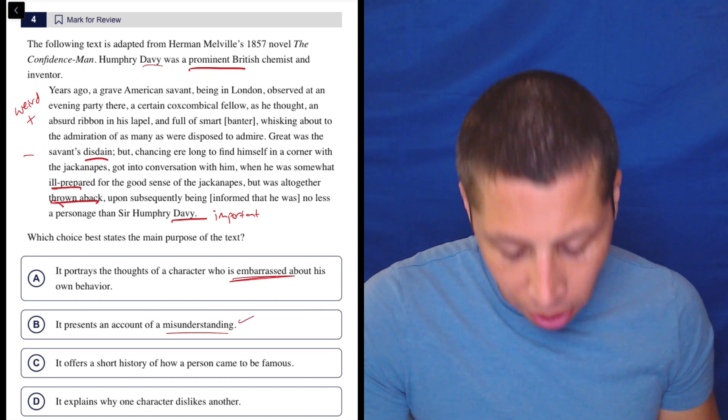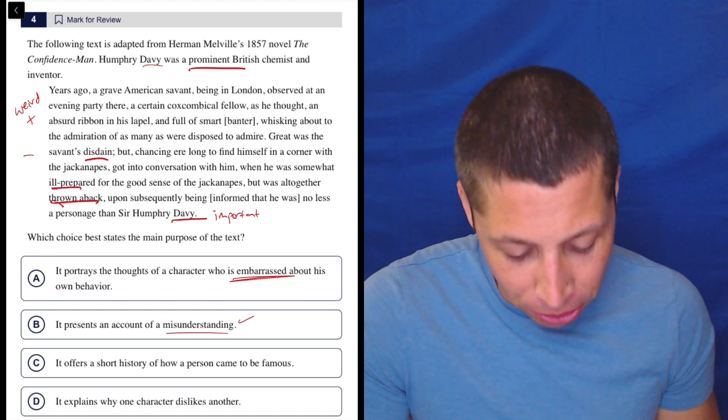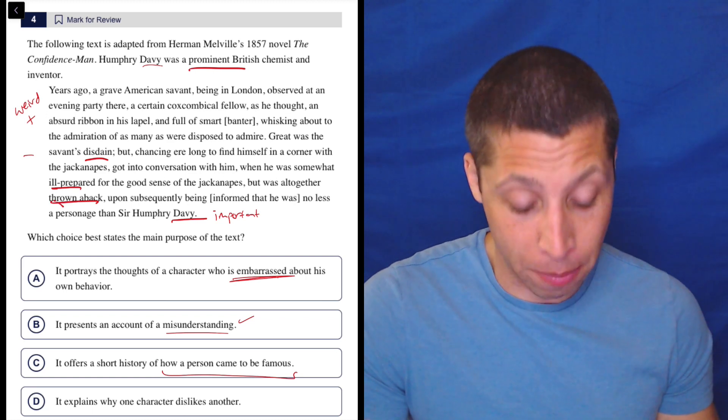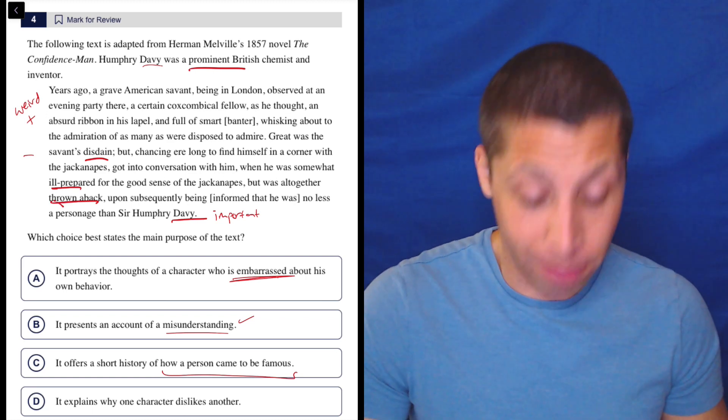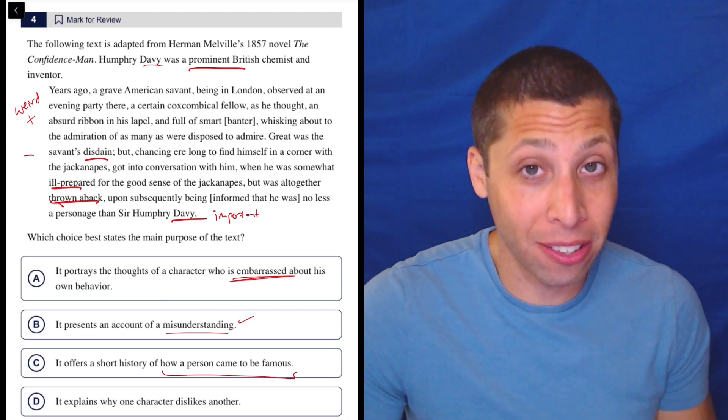C, it offers a short history of how a person came to be famous. Well, turn that into a question. Perfect example of this. How did he become famous? I don't know. It just says he's famous. He's prominent. It doesn't say how. It's not in the passage.